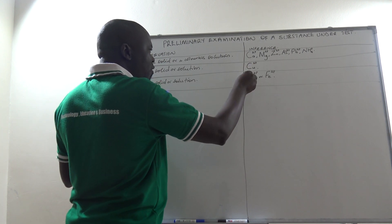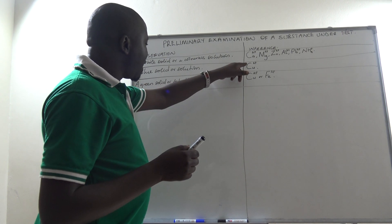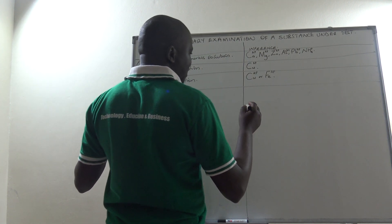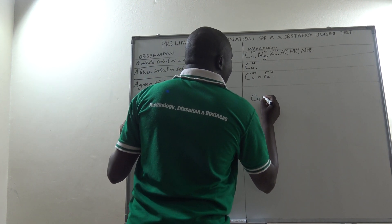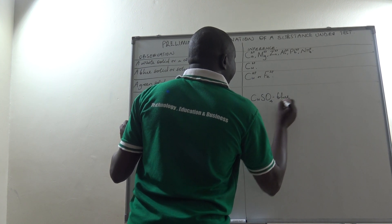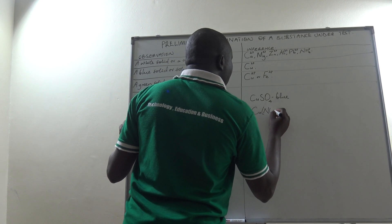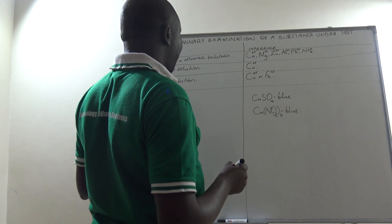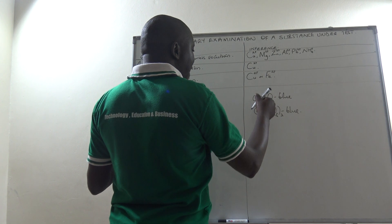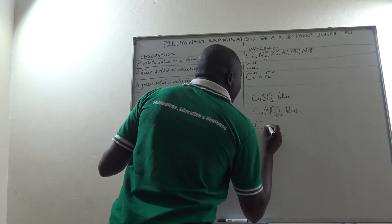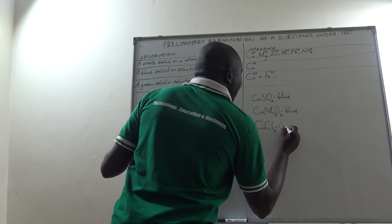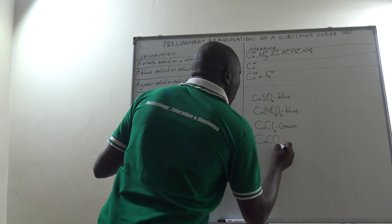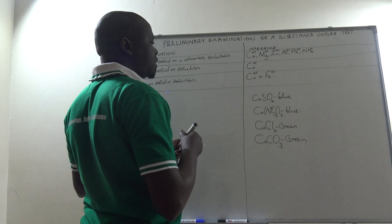Someone may ask: why does copper two ion appear with both the blue and the green? Among the salts we have seen: copper two sulfate is blue in color, copper two nitrate is also blue in color. Then copper two chloride is green in color, and copper two carbonate is also green in color. And all the iron two salts are green in color.